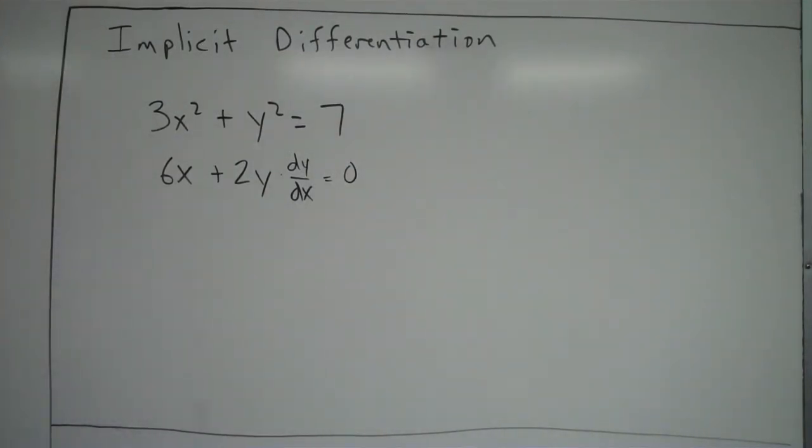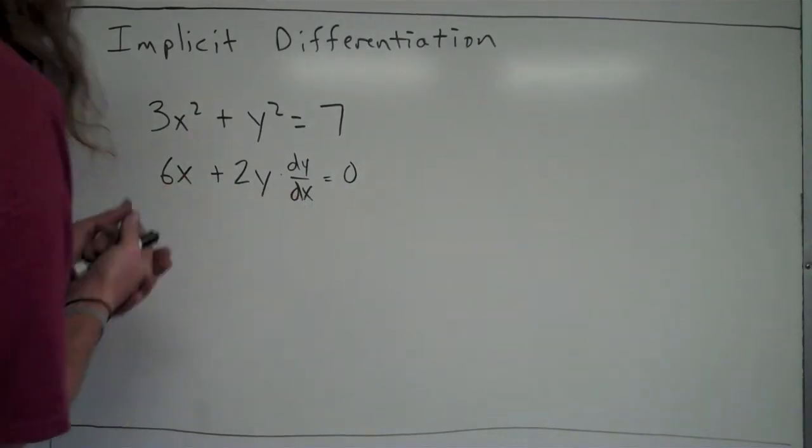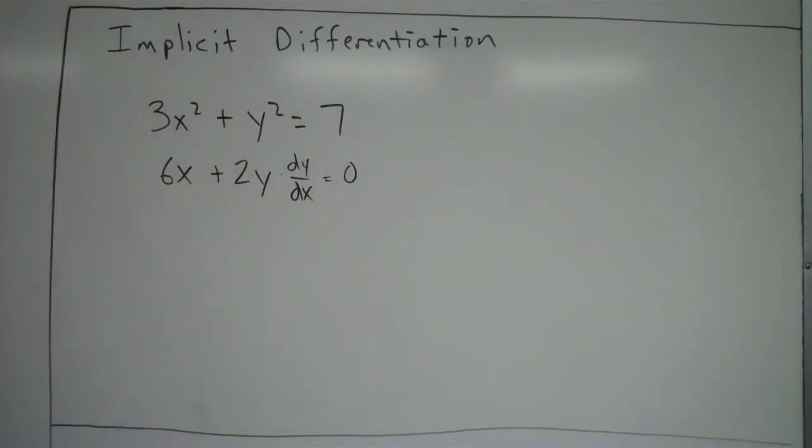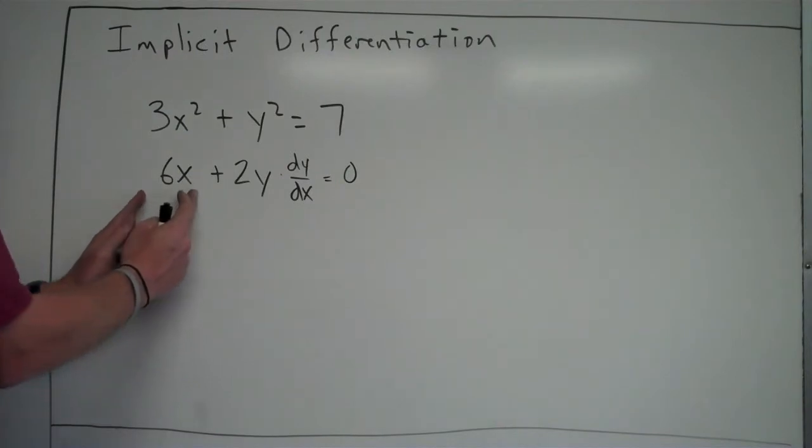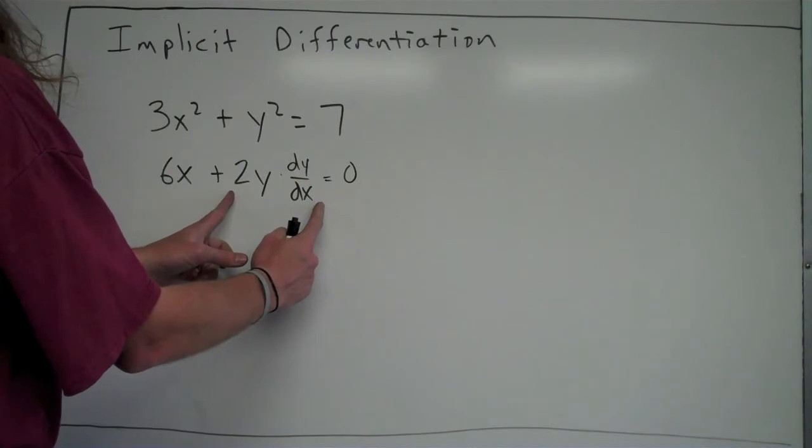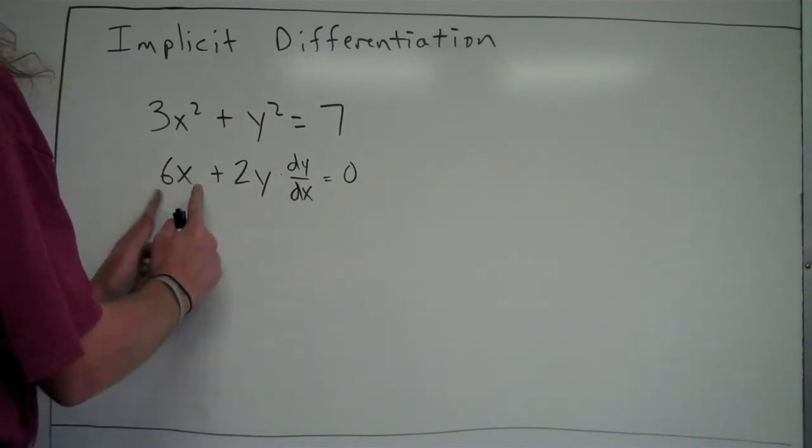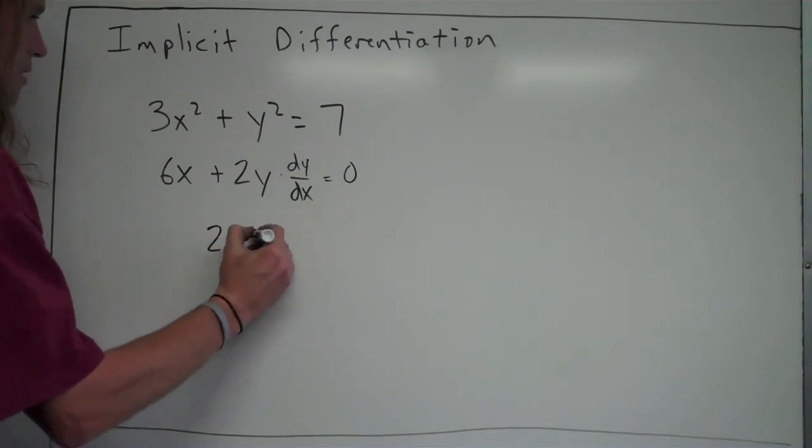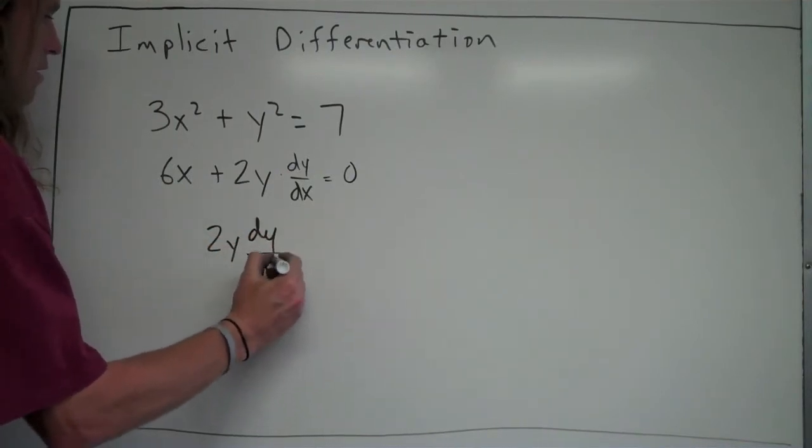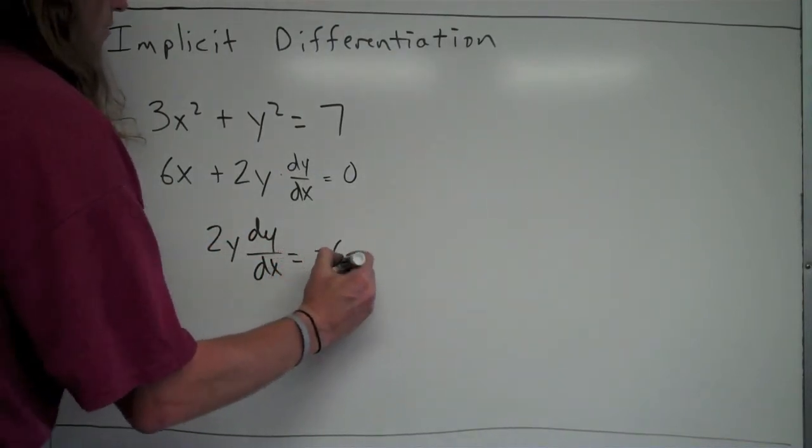Now, our goal here is to find dy over dx. So this one's a fairly simple one, there's only one dy over dx here. But basically, at this point, you're going to want to gather your dy over dx terms on one side and everything without a dy over dx term on the other side. It doesn't matter which side you choose, I'll just keep this dy over dx term here and move my 6x term over by subtracting it, so I'll get 2y times dy over dx is equal to negative 6x.